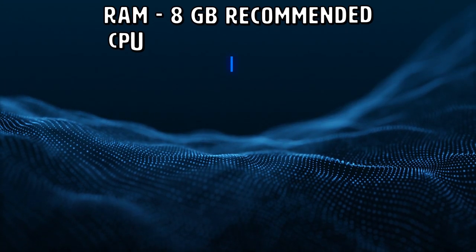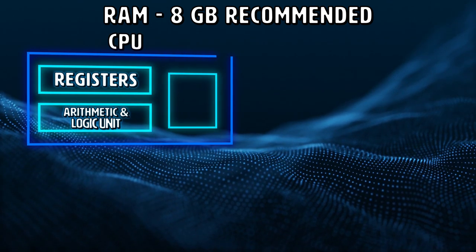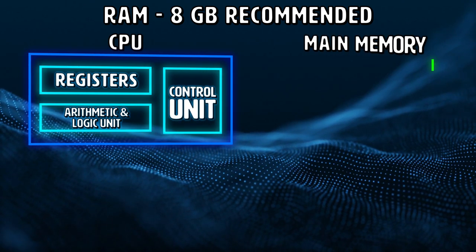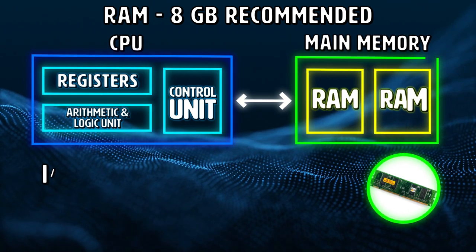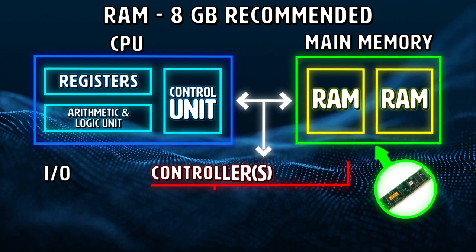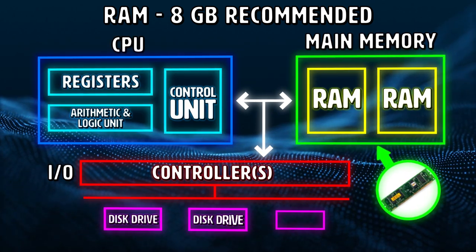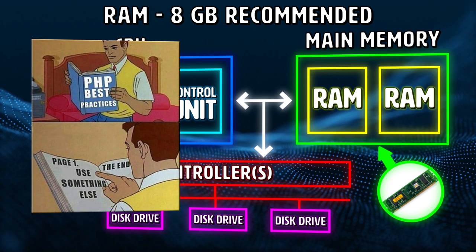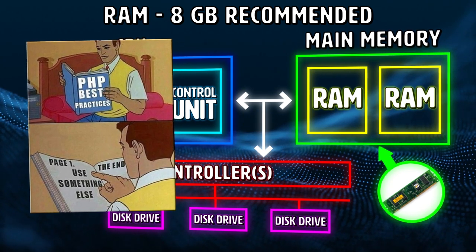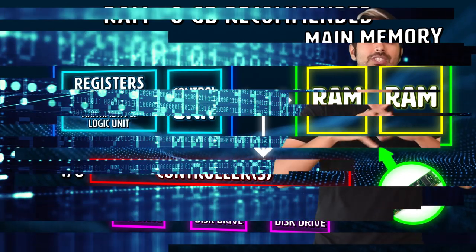Next in line in terms of performance is the RAM, or random access memory. Because processors are fast and hard drives are slow, to avoid long wait times, instead of having the processor read and write to the hard drive directly, RAM is the place data is temporarily stored so that reading and writing is much faster. A bare minimum you'll need is 8GB of RAM. It's always good to have more RAM on a laptop to efficiently run local servers, compilers, code editors, and web browsers simultaneously.